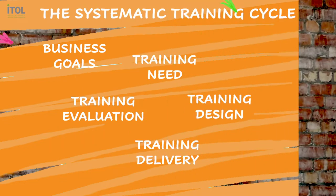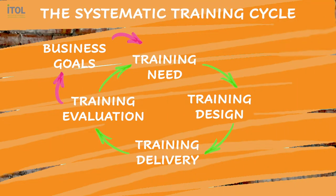In the last episode, we looked at the process of training called the systematic training cycle, and we identified its four elements: identifying training need, designing something to meet the need, delivering what you've designed, and evaluating the whole process. We also bolted onto that the thing that keeps training rooted in reality - the organizational goals, the requirements of the organization. And that's where we left it last time.